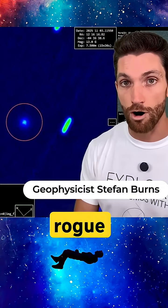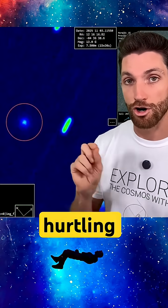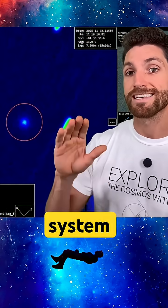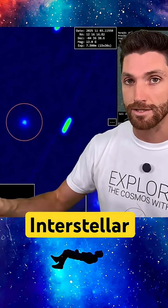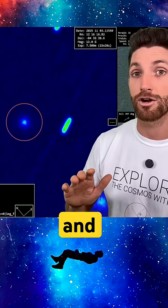Breaking news! A new rogue object has been found hurtling through our solar system directly in between interstellar object 3i Atlas and Earth.